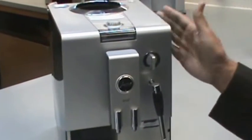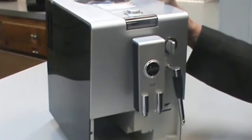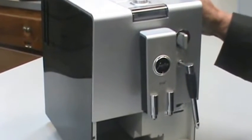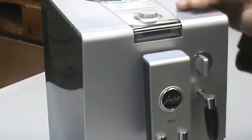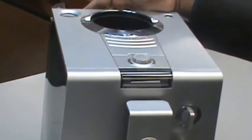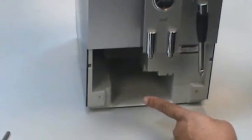All these models are identical as far as the opening and closing is concerned. So we will display just the model we have now here, ENA-4, which process for opening and closing will apply for all other ENA models. Right now, this machine, we have already removed the water tank from the rear, and we have removed the drip tray and the used coffee bin from the front.